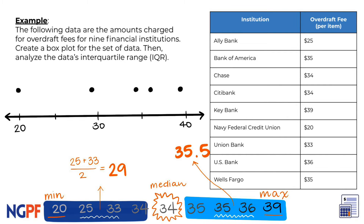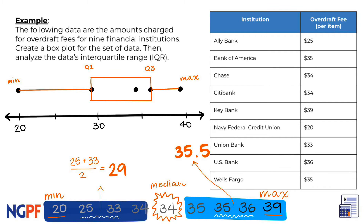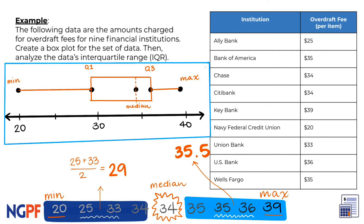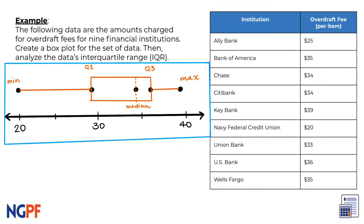The last step is to connect and label our points. Let's draw a line from the minimum to Q1 and Q3 to the maximum — these are our whiskers. Then we can draw a box from Q1 to Q3 and draw a dotted line at the median. And that's our box and whisker plot — she is beautiful! We can see that 25% of the data lies in this area, another 25% in this area, and so on and so forth.